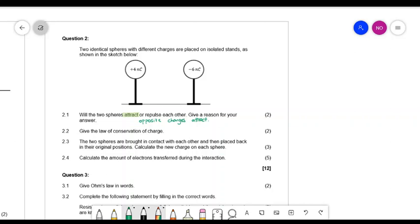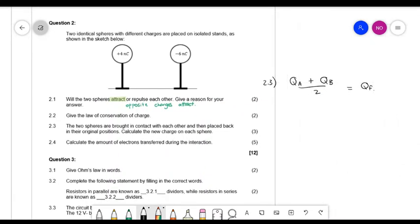For 2.3, they say the two spheres are brought in contact with each other and then placed back in the original positions. Calculate the new charge on each sphere. So this is the one I just showed you. For 2.3, Q_A plus Q_B divided by 2 gives you the final charge. Your formula is very important. And I'm going to keep these in nanocoulomb. So we have 4 nanocoulomb minus 6 nanocoulomb divided by 2.